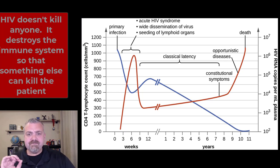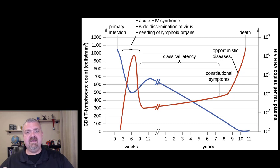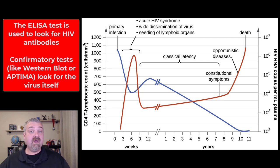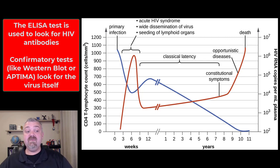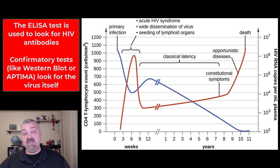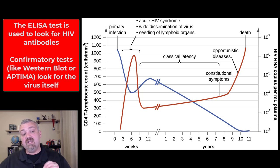One last thing to cover is diagnosis, because you're seeing antibodies and viral load on this image. The first test most people would do is the ELISA test to look for HIV antibodies. But as mentioned, that can take up to a few months — for example, after a needle stick injury in a healthcare environment, you'd be tested and then tested again in a few months. A confirmatory test would be either the Western blot or what's now called the Aptima, which is an RNA test since HIV is an RNA virus — that's looking for the actual virus.